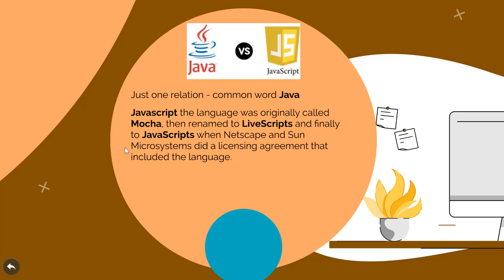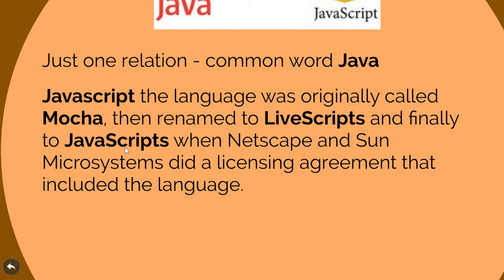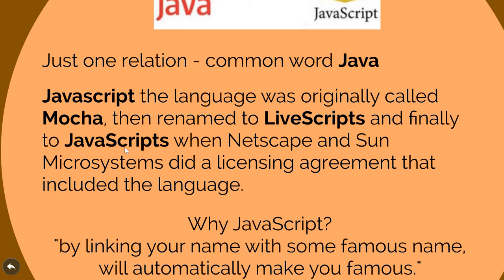JavaScript was originally called Mocha, then renamed LiveScript, and finally given the name JavaScript. Netscape and Sun Microsystems did a licensing agreement that included this language. The reason Java was included in the name is simple: by linking your name with a famous name, you automatically make yourself famous. In the 90s, Java was so famous that anything linked with it became automatically famous. Just as it is easier to launch a product under a well-known brand like Nike or Puma, they connected JavaScript with Java — without any technical relationship — only to gain its fame.